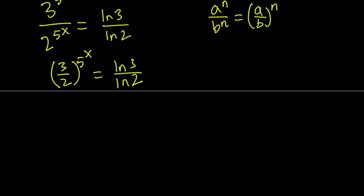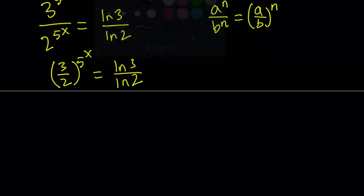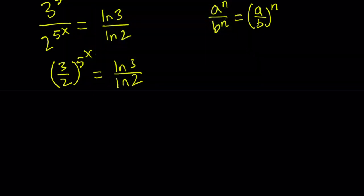So we need to do the same thing here. We need to move that thing to the front, but we have to ln both sides first. So let's go ahead and ln both sides. ln 3 halves to the power 5 to the power x equals ln ln 3 over ln 2.